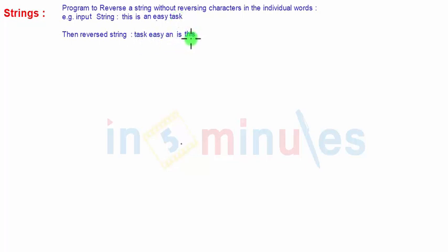So we have kept the words intact but their order is changed. The first word has become the last word, second word becomes second last word and so on. The last word becomes the first word, but the words are intact. They are not reversed. Now how to do this, let's see.